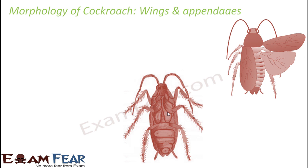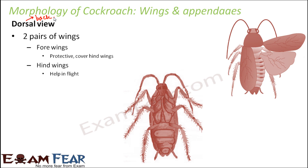From the dorsal view — that is, from the back — we can see the wings. A cockroach has two pairs of wings, totaling four wings. The fore wings are present towards the front and act as a protective cover, while the hind wings are present towards the back. The hind wings actually help the cockroach to fly, whereas the fore wings just protect the hind wings.